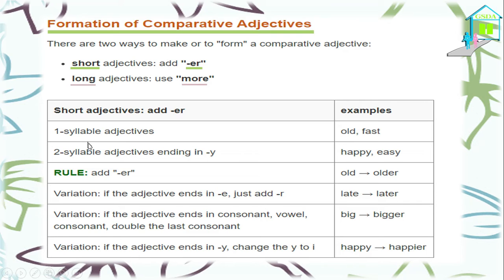Two-syllable adjectives ending in Y, like 'happy' and 'easy,' also take -ER. The rule is to add -ER: 'old' becomes 'older.' For the adjective 'late,' which ends in E, we add just R — so 'late' becomes 'later.' When an adjective ends without E, we add -ER. When it ends with E, we add just R.